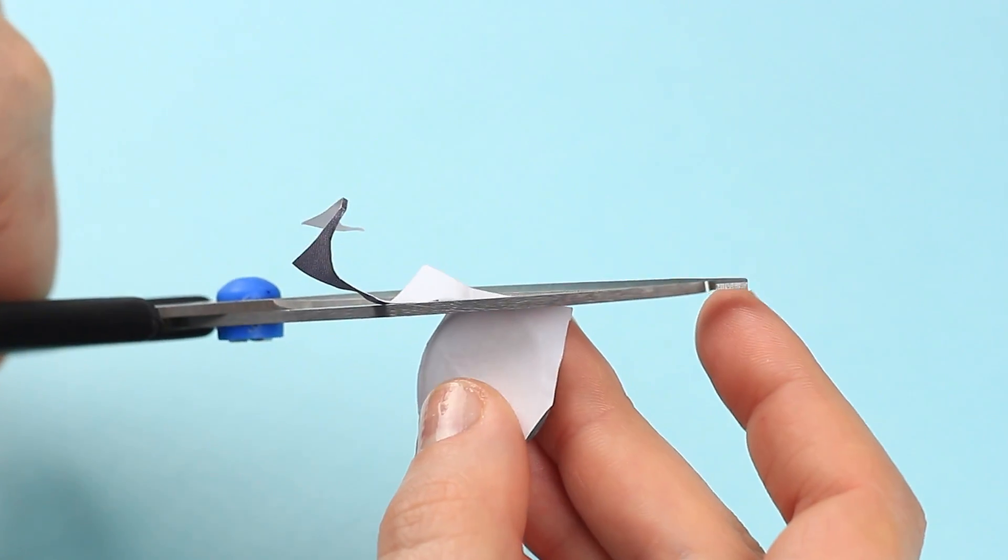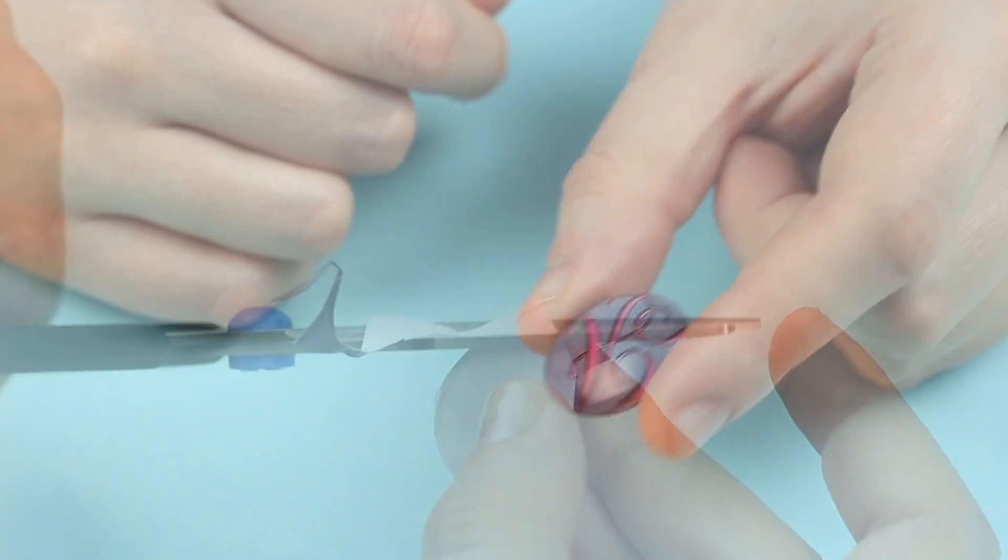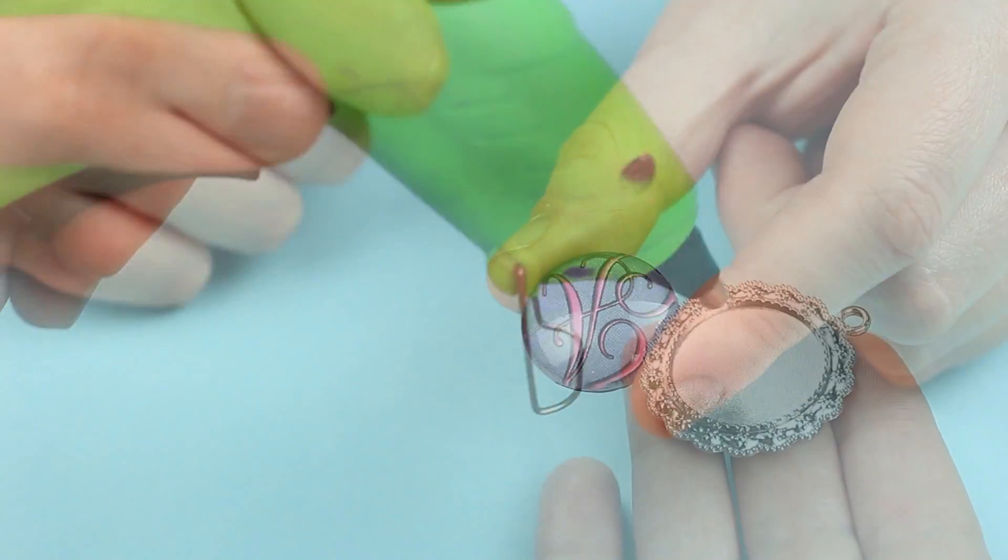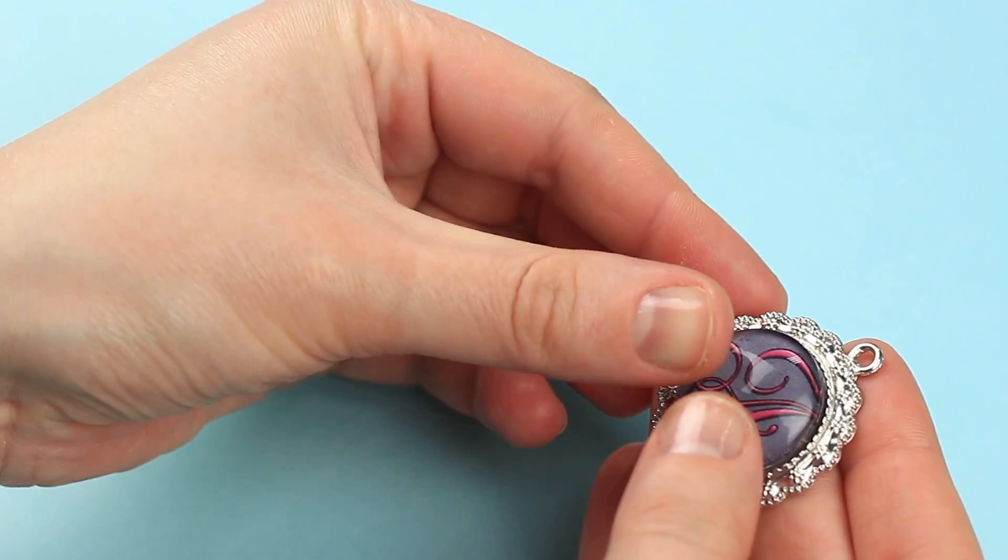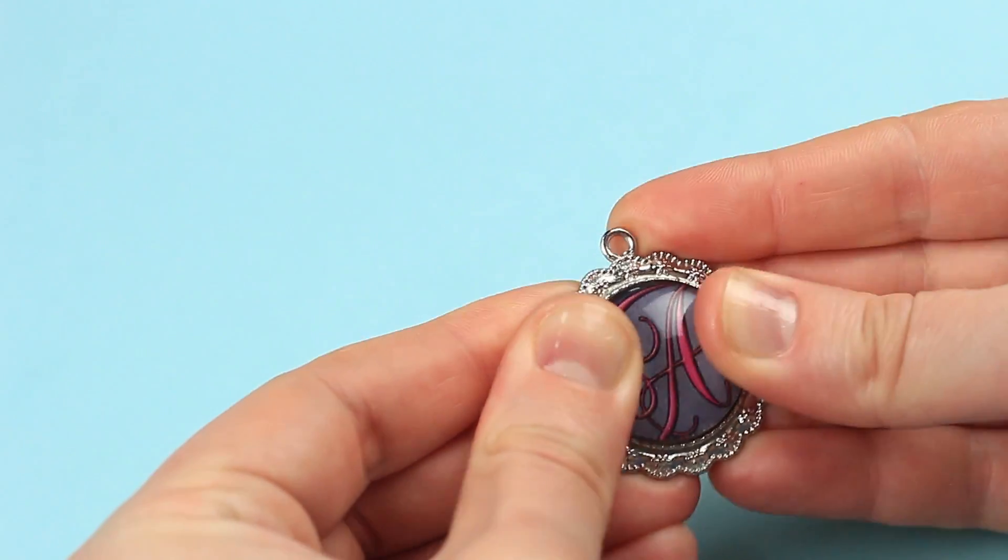Take scissors and cut off the excess. Hot glue the glass detail to the metal setting. Press down until dry.